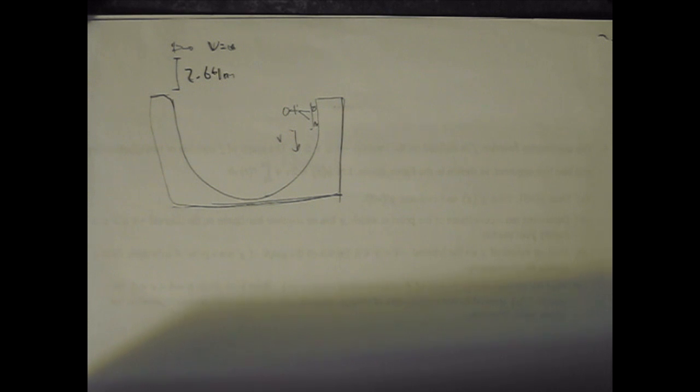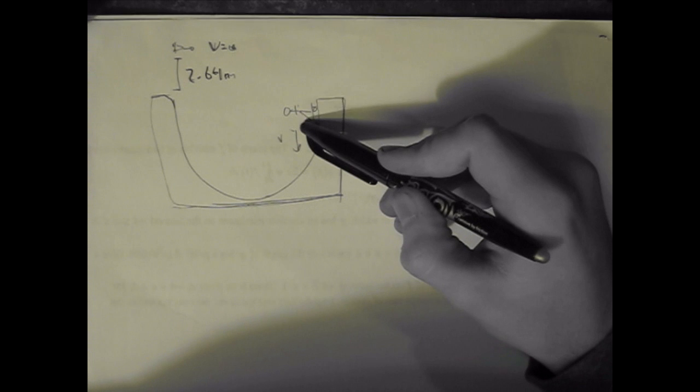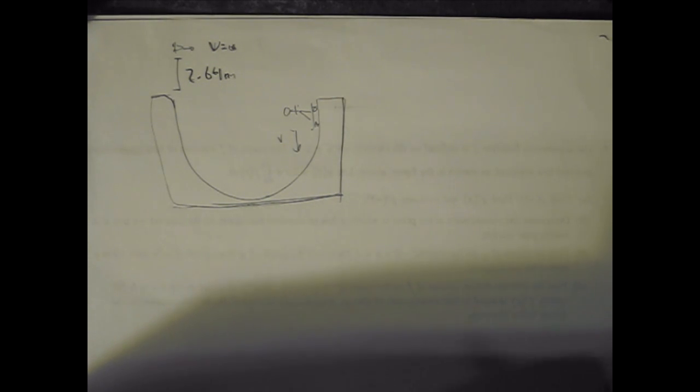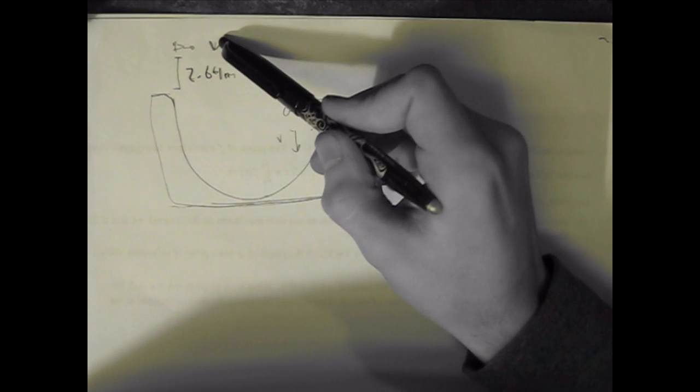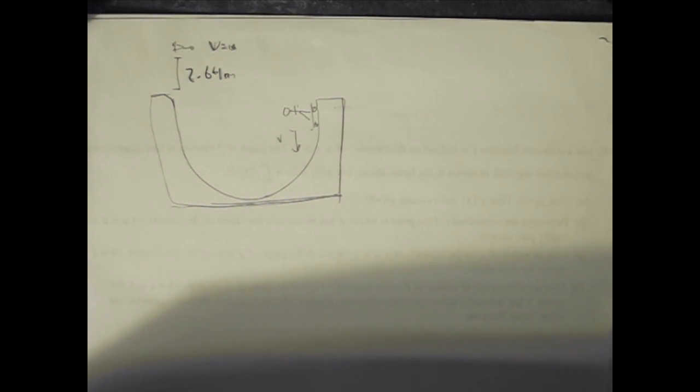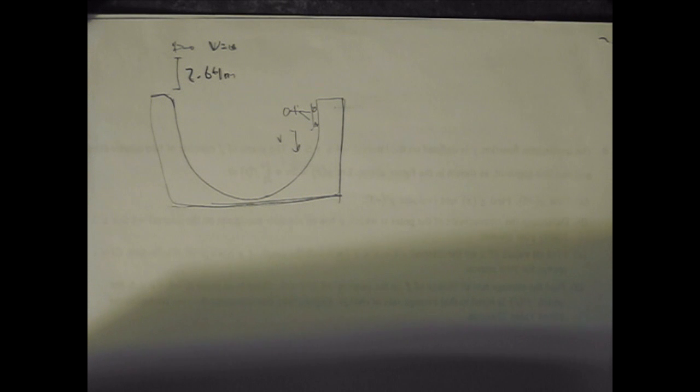According to the diagram, a skateboarder starts out at point A—which I forgot to label, but this is point A—and rises to a height of 2.64 meters. So he ends up here at 2.64 meters above the top of the ramp at point B.